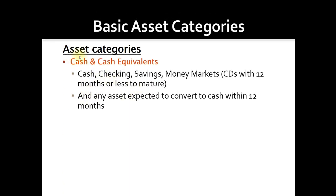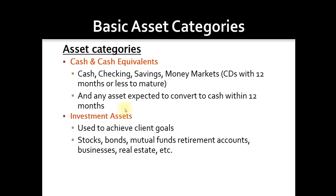Let's get into the basic asset categories. First is cash and cash equivalents — anything in your checking account, cash on hand, even cash in your wallet, money market funds, etc. Anything expected to convert to cash within 12 months is also considered a cash asset. Investment assets are assets invested in a stock, a business, or something of that nature — normally thought of as long-term assets to achieve client goals, such as stocks, bonds, mutual funds, and retirement accounts.